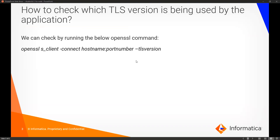How to check which TLS version is being used by the application? We can check the same by running the below OpenSSL command: openssl s_client -connect hostname:port_number_of_the_node -tls_version. Here, for TLS version, you need to specify which version you are trying to check.